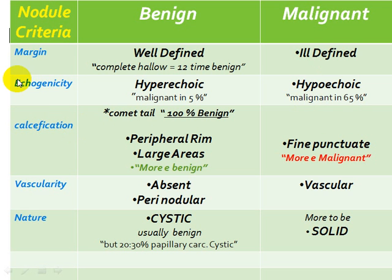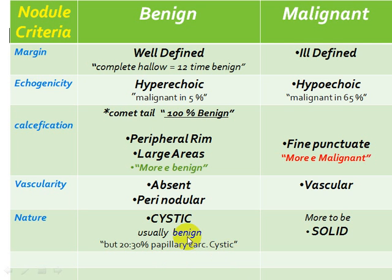Next in MENCV is N — Nature. A cystic lesion or nodule is mostly benign, but the problem is that 20 to 30% of papillary carcinomas can be cystic. So the nature may be non-dependable, similar to echogenicity and margin — it is suggestive but not definitive.